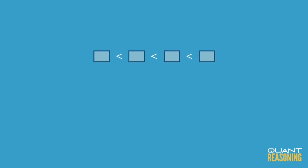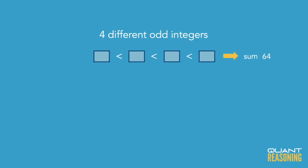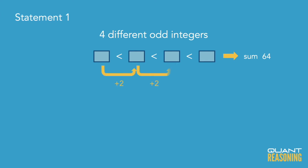Think about these two statements for a moment. We know that there are four different odd integers — we already knew that. Statement one says that they're consecutive odd integers. Statement two says that the greatest of them is six more than the least of them. Well, if they're consecutive odd integers, of course the greatest is six more than the smallest.